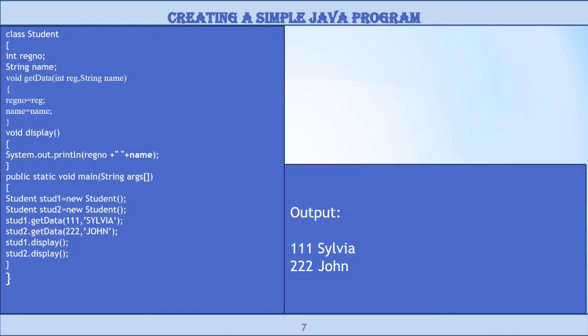So to get two different values, student1 equals new student and student2 equals new student. So student1 dot get data which helps to get the values for the first object, that is triple one and Sylvia. And for the second object student2 which helps to get the values register number triple two and John.